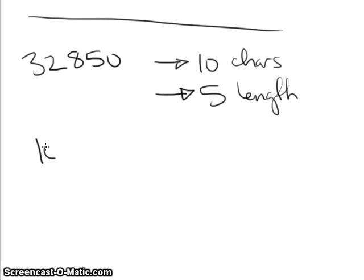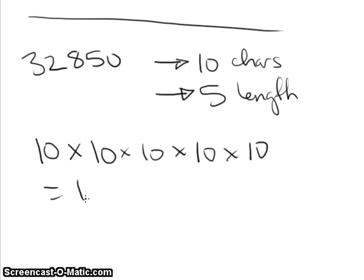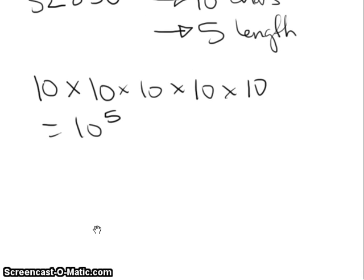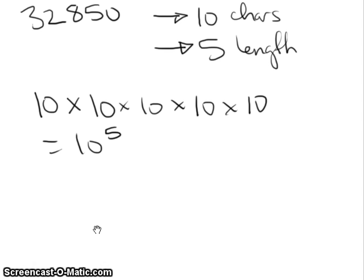So what that means is if an attacker was guessing a password of length 5, they would guess 10 possibilities for the first character, 10 for the second, 10 for the third, 10 for the fourth, and 10 for the fifth one. Which we could write as 10 to the power 5. And that's pretty straightforward, that's 100,000.